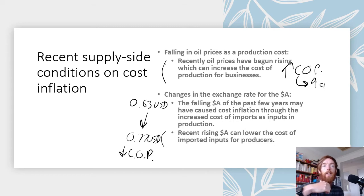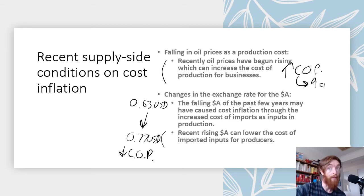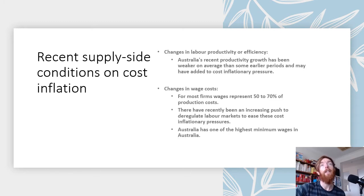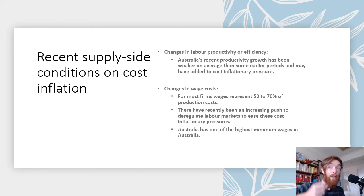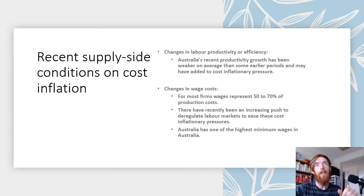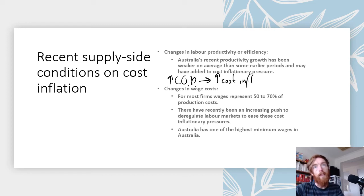We always call that easing cost inflation as there is less price pressure. One important point: demand inflation makes up a much bigger proportion of inflation than cost inflation, so demand inflation affects the goal a lot more. Regarding changes in labour productivity and efficiency — recently productivity growth has been weaker on average than earlier periods, like the late 90s and early 2000s tech boom. If productivity is not increasing at the same rate, that increases cost production pressures, potentially leading to increased cost inflation.